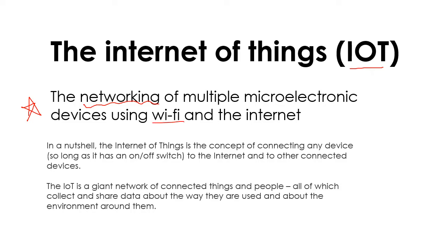Normally it uses Wi-Fi. It's when lots of devices — it could be your phone, your Fitbit, your fridge at home, or manufacturing equipment — are no longer just functioning by themselves or being isolated. They are now connected to the Internet and they can share information back and forth. So here's a definition: the Internet of Things is the concept of connecting any device, as long as it's got an on/off switch, to the Internet and to other connected devices, so they can collect and share data about the way they are being used.